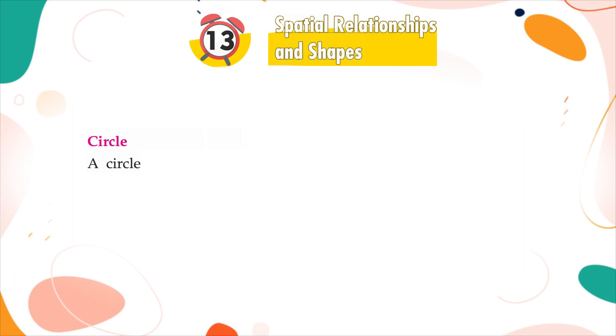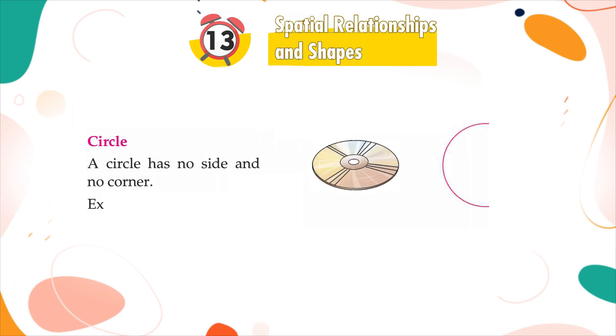Circle: A circle has no side and no corner. Examples of circle are plate, coin, CD, etc.